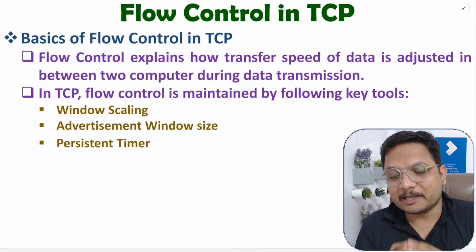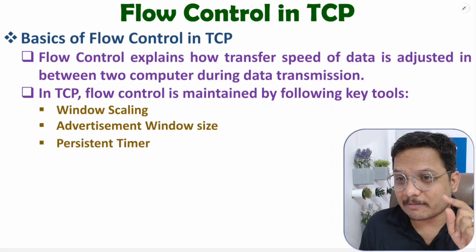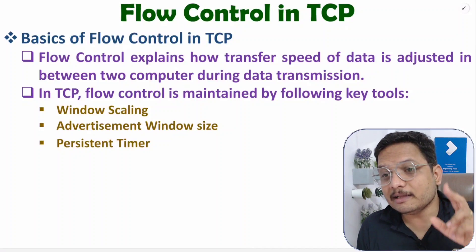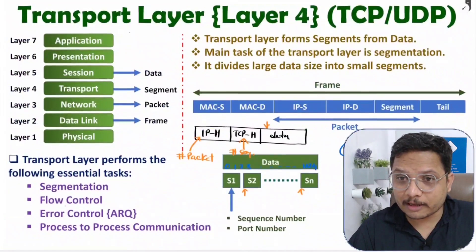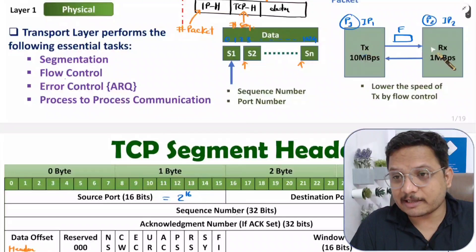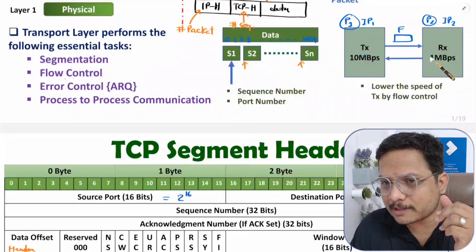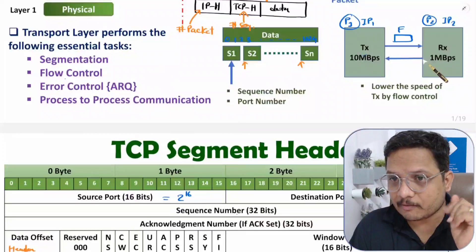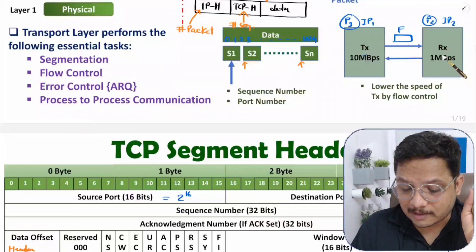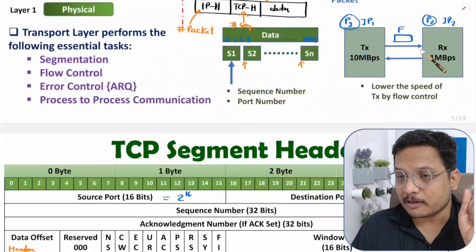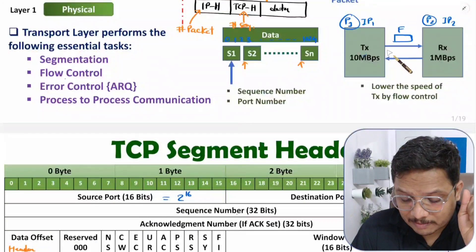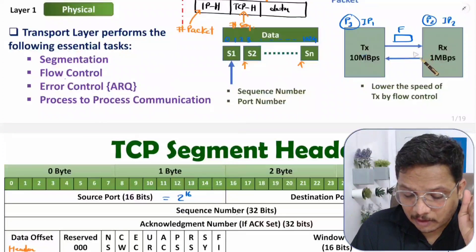Hello friends, welcome to Engineering Funda Family. In this video I am going to explain flow control mechanism in TCP. At the very beginning of this chapter on transport layer, I explained flow control mechanism done in transport layer. Flow control is a control of data transmission speed. For example, if the transmitter is sending data at 10 Mbps but the receiver can handle only up to 1 Mbps, the receiver cannot receive that data. So the receiver will give feedback to the transmitter saying it can handle up to 1 Mbps only, so you will have to transmit data at max 1 Mbps.